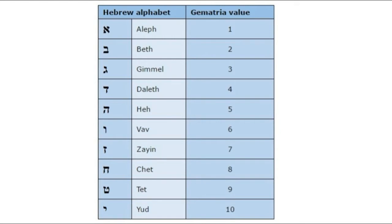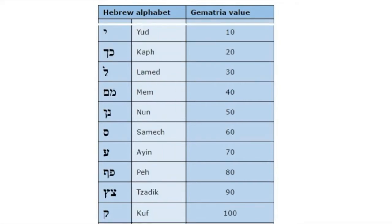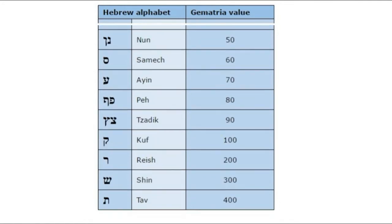The method is very simple. To the first letter, Aleph, we assign the number 1; to the second, Beth, the number 2; and so on until we reach the value 10. From that point, we assign the values 20, 30, 40, and so on until 100, and from there we assign the values 200, 300, 400.